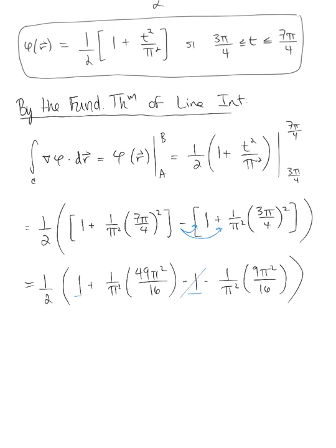And look at all this beautiful simplification here. We have 1 and minus 1 cancel each other right out. These π² in both the second and fourth term cancel each other out, so we are left here with one half multiplied by 49 over 16 minus 9 over 16. And we are so lucky here, we have a common denominator, so I've got one half multiplied by 40 over 16.